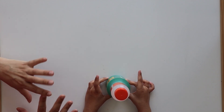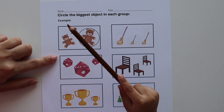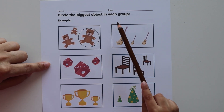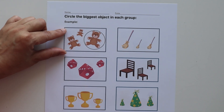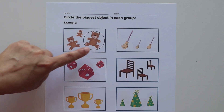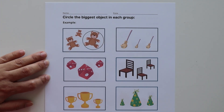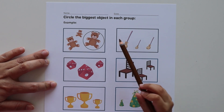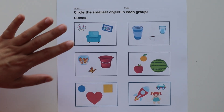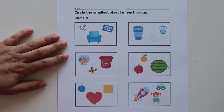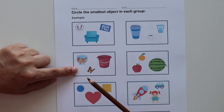Once you are done with oral practice, you can move on to written work. We have worksheets you can practice with your kids. The first worksheet has different groups of objects — the child has to find which is the biggest and circle it. For example, we have three daddy bears and the child identifies the biggest. You can use a similar worksheet for the smallest, where the child has to identify and circle the smallest object.